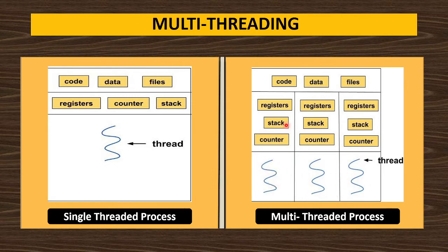Each thread will have its unique register, stack, and counter. That thread won't share its stack, register, and counter with other threads. Similarly, thread number 2 also has its own register, stack, and counter. Thread number 3 also has its own register, stack, and counter. Whatever is stored in the register, stack, and counter of a thread won't be shared — it is unique to that thread only.